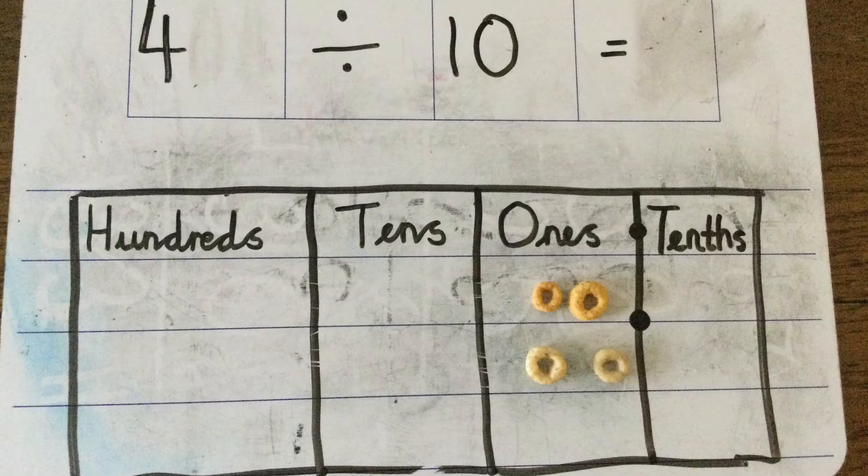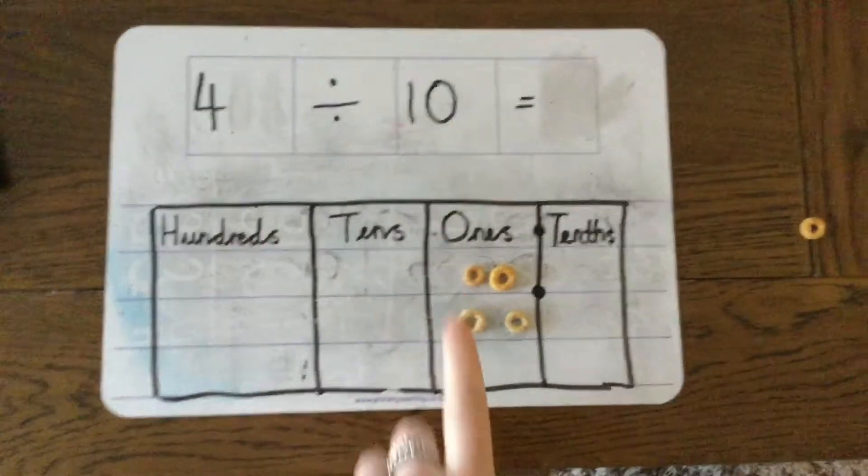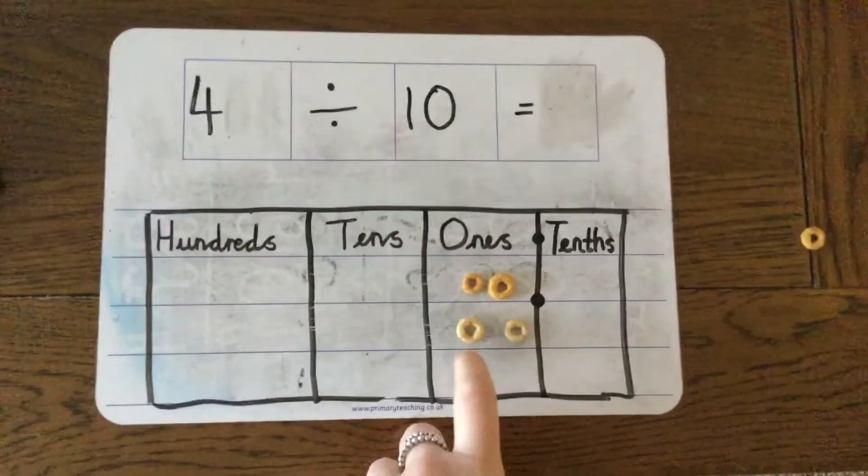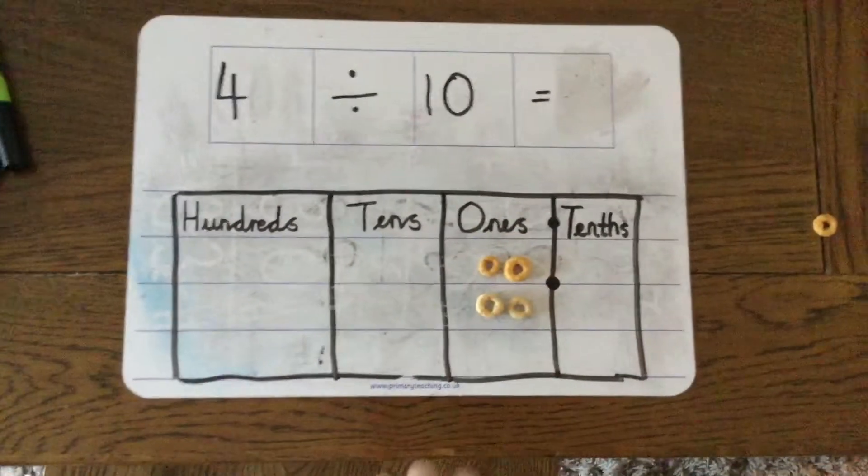Now we're going to look at 4 divided by 10. So we've got 4 divided by 10. Currently, our 4 has a place value of 4 ones. 1, 2, 3, 4 because we're in our ones column.